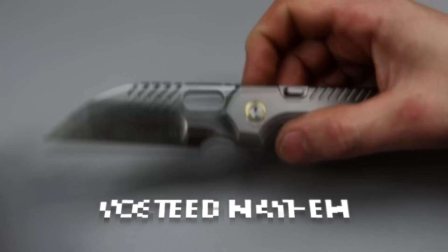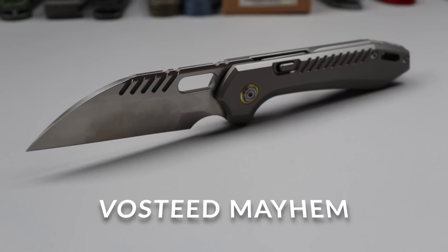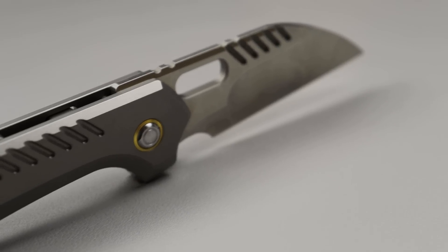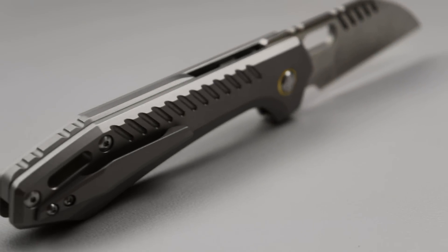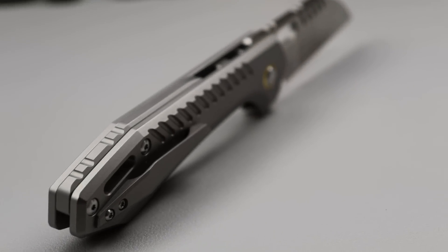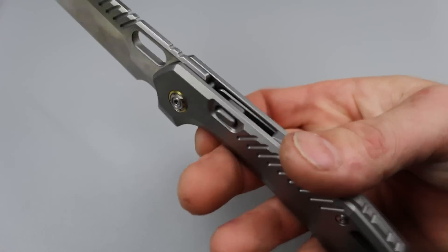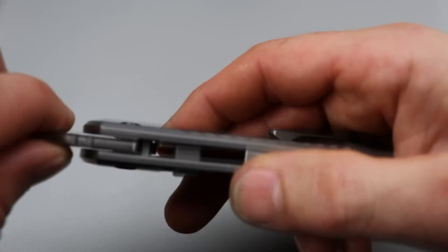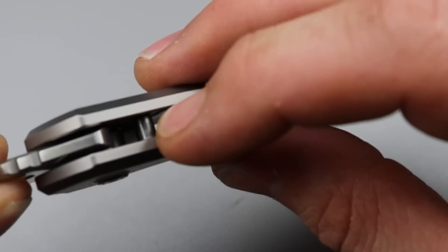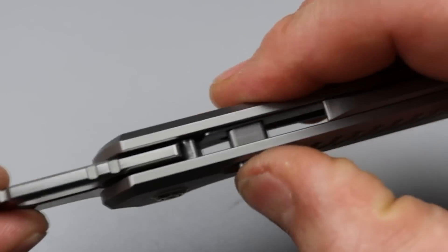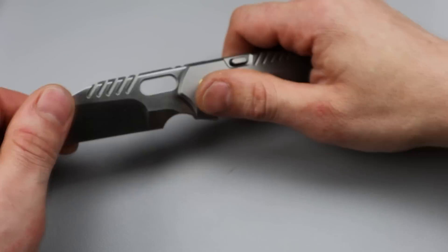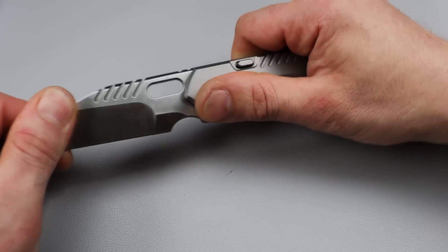Next is another one that's coming out very soon. I actually have the Sheepsfoot version on the way. This one is the Warncliffe version. This is the Vosteed Mayhem. And I really appreciate the way they did this because it's basically a compression lock. It's a compression lock with a button attached.